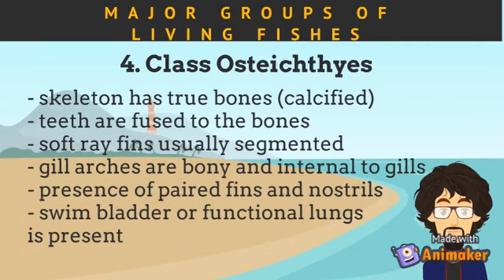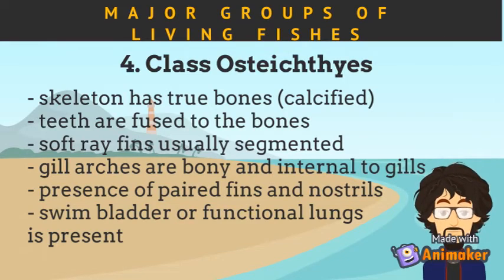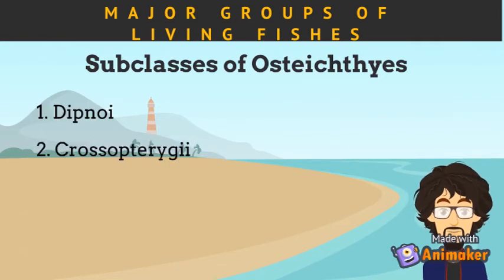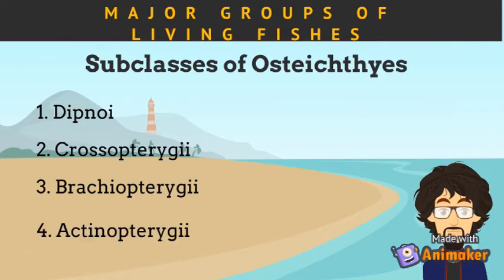The next class is Osteichthyes, also known as the bony fishes, having true bones or calcified skeleton. The teeth are fused to the bones, and the soft ray fins are usually segmented. There is a presence of paired fins, nostrils, swim bladder, or even functional lungs in some species. There are four known subclasses: Dipnoi, Crossopterygiae, Brachyopterygiae, and Actinopterygiae.